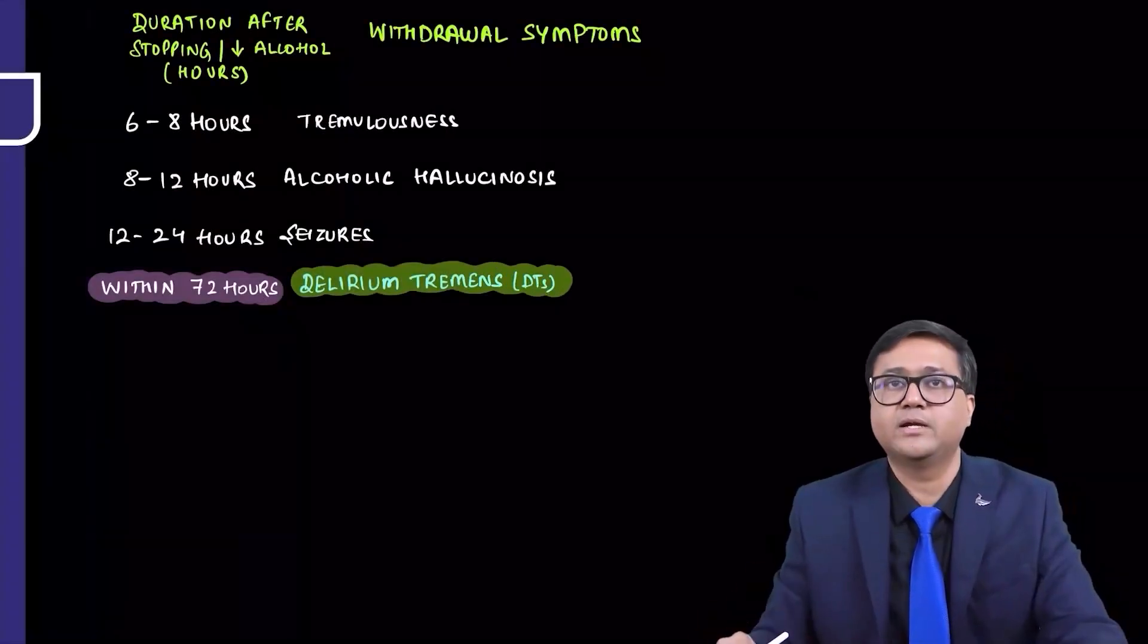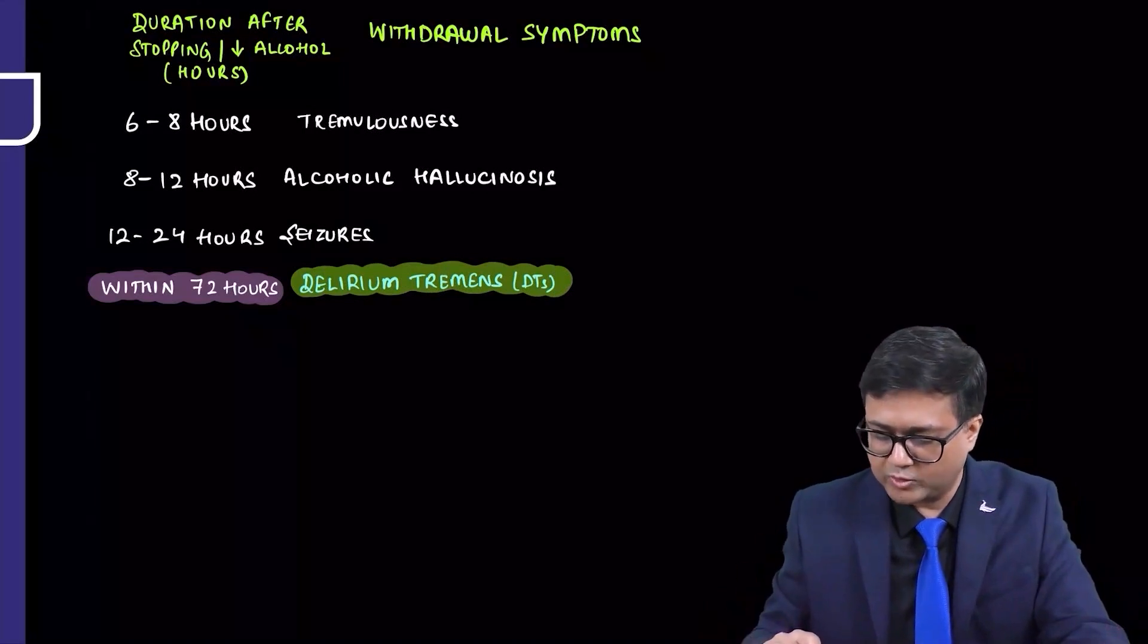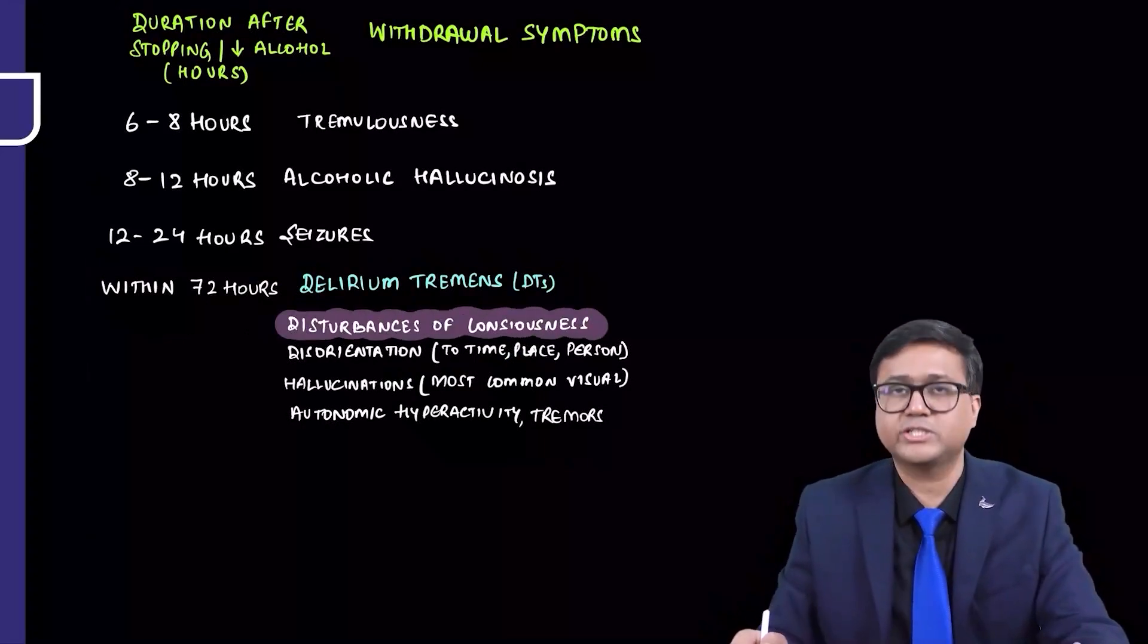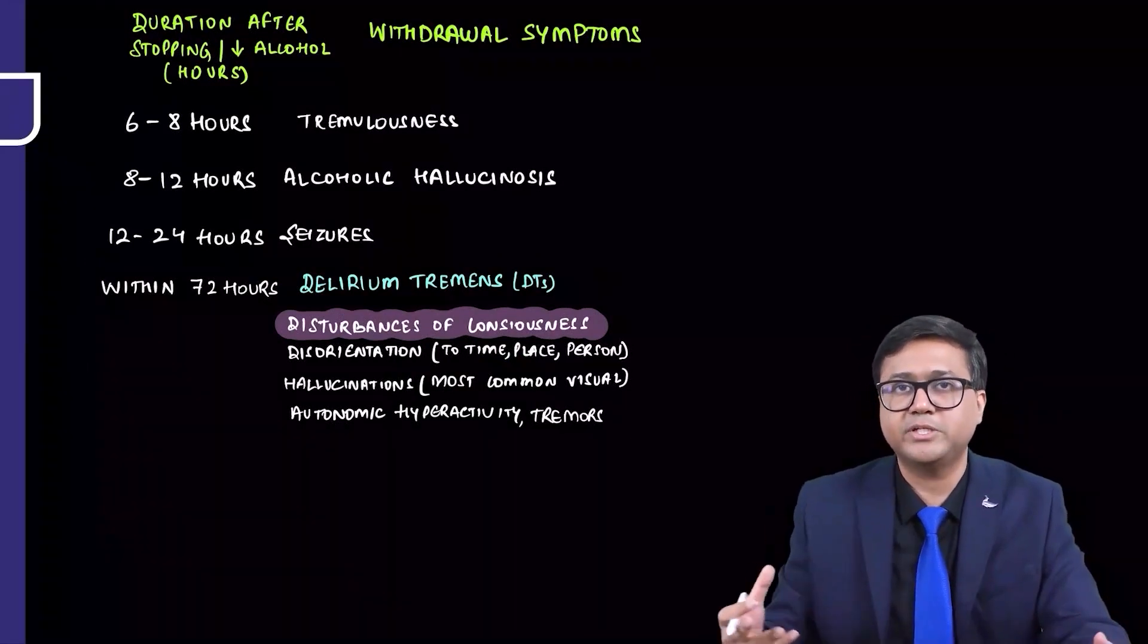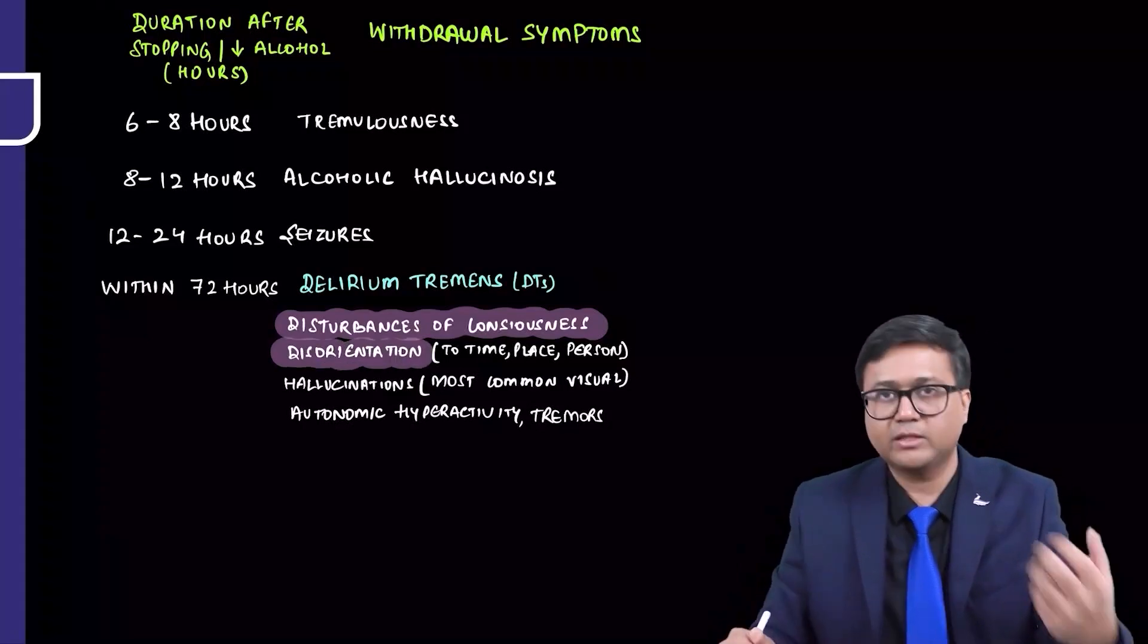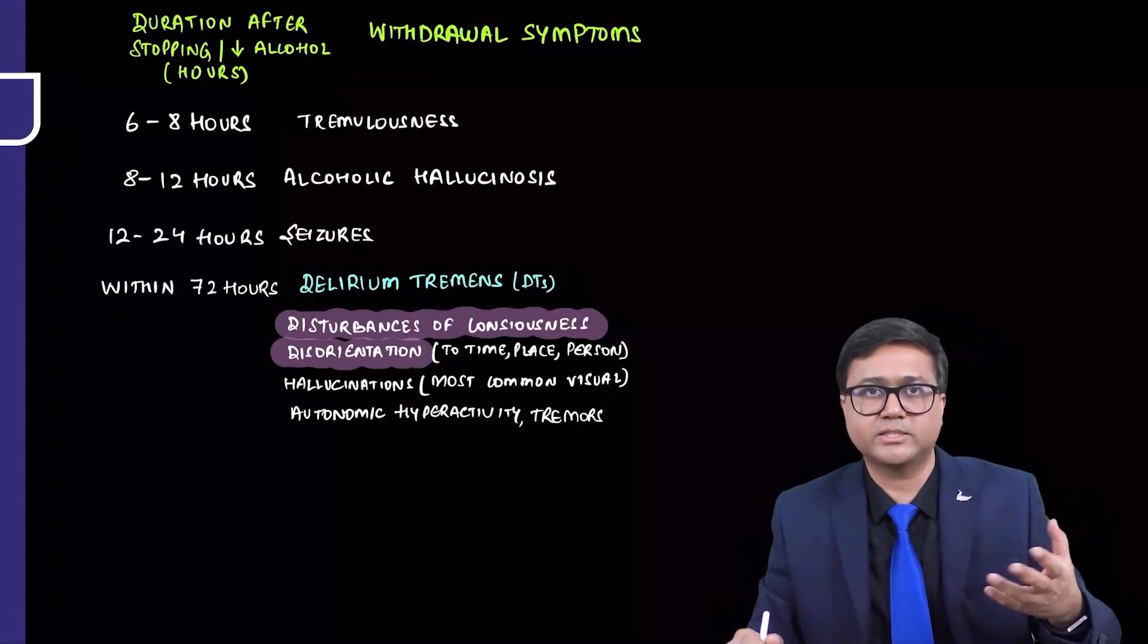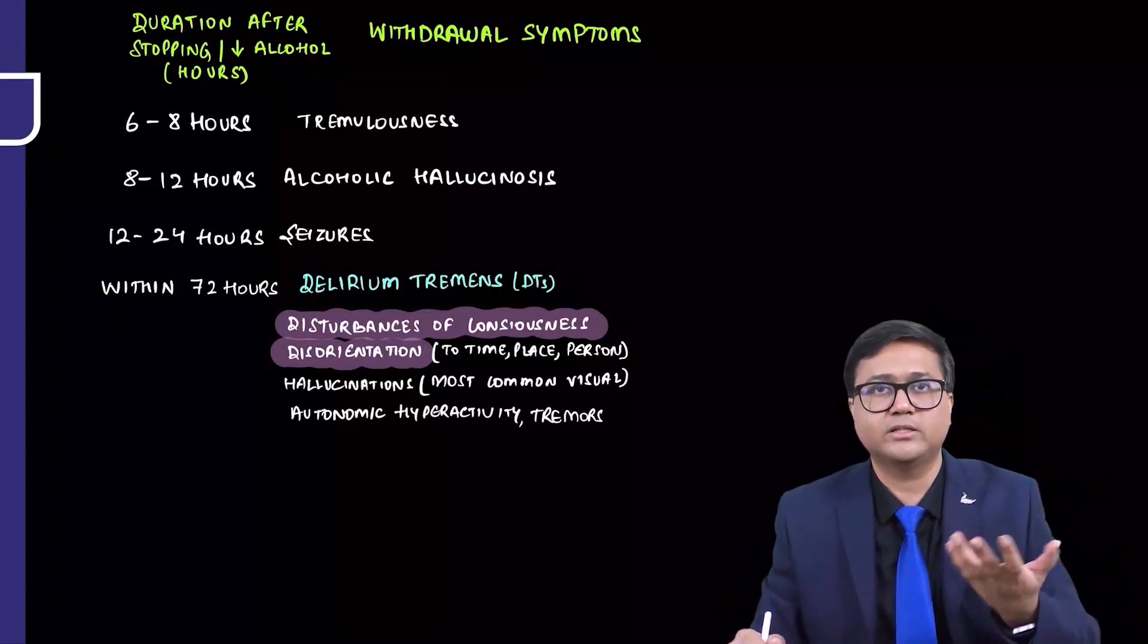Delirium tremens may develop. It's a very severe form of alcohol withdrawal. What is delirium tremens? There is disturbance of consciousness. Person is in a delirium state. His consciousness is impaired. He is disoriented. When the family members reach the hospital, he is not able to identify the time. He is not able to identify the place. He is saying he is at his home, although he is in the hospital. He is not able to identify the person. So there is disorientation to time, place, and person.